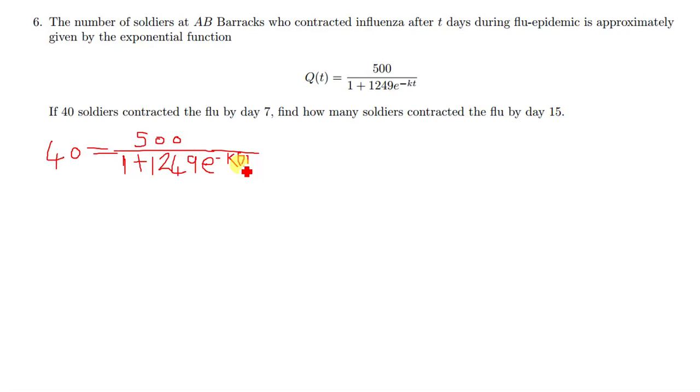So here it's just a matter of cross multiplying. When you cross multiply this we're going to have 40 times 1 gives us 40, then 40 times 49960 multiplied by e to the negative 7k, and then everything equals 500. Now here we take the 40 to the other side.